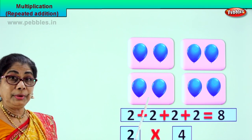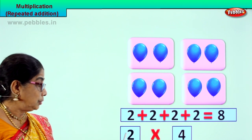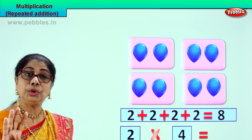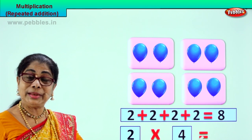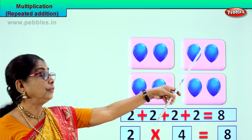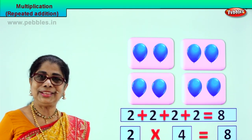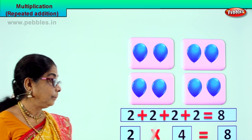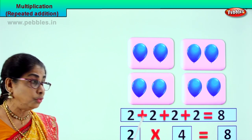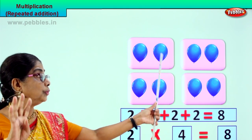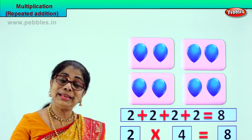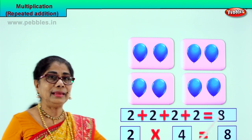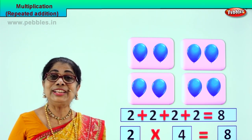Two in one box. How many boxes are there? One, two, three, four. So two into four boxes. Two balloons in each box, number of boxes four. Two into four is equal to eight. Two, four, six, eight. You know the tables now! Two into four — two balloons into four boxes of two — equal to eight. Now you know what multiplication is. This is the sign. Multiplication is repeated addition.